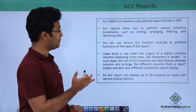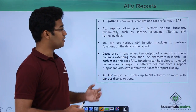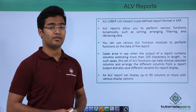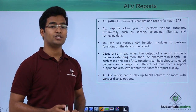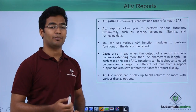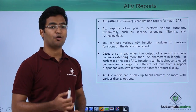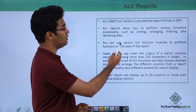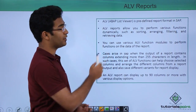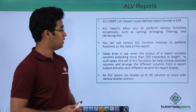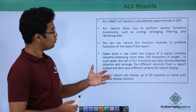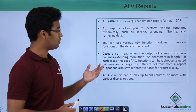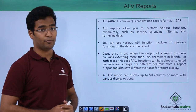ABAP List Viewer, or ALV, is a predefined report format in SAP. ALV allows us to perform multiple functions on the output of a particular program like sorting, arranging, filtering, and retrieving the data. You can also use various ALV function modules to perform functions on the data of the reports.